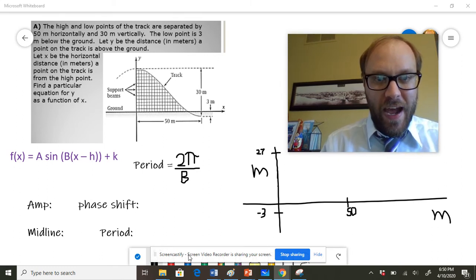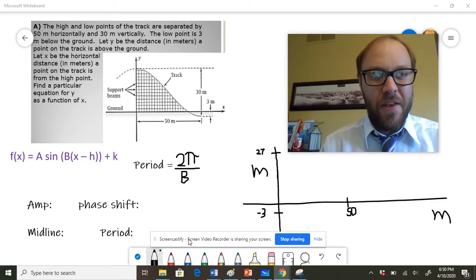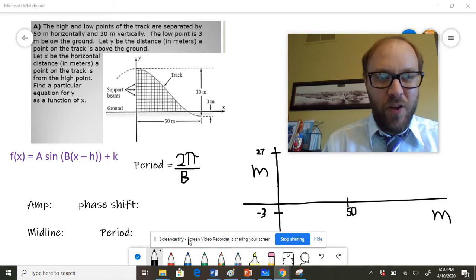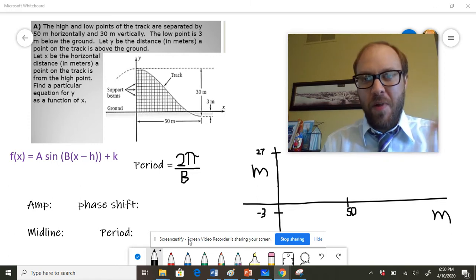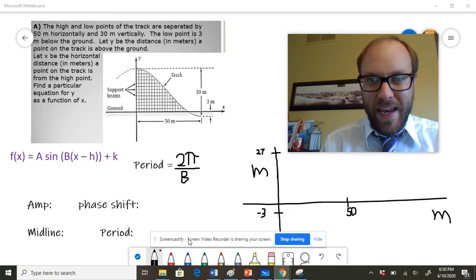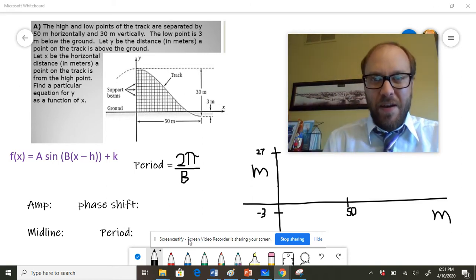We are told that the high and low points are separated by 50 meters horizontally and 30 meters vertically. The low point is 3 meters below the ground. We're going to write a function that gives us the distance a point is above the ground at any particular value of x. So for some horizontal value, it'll give us the height above the ground vertically.